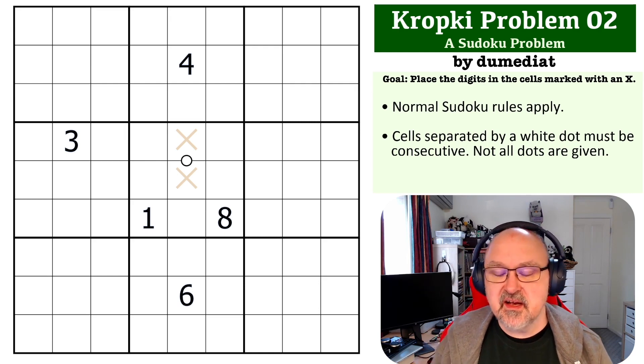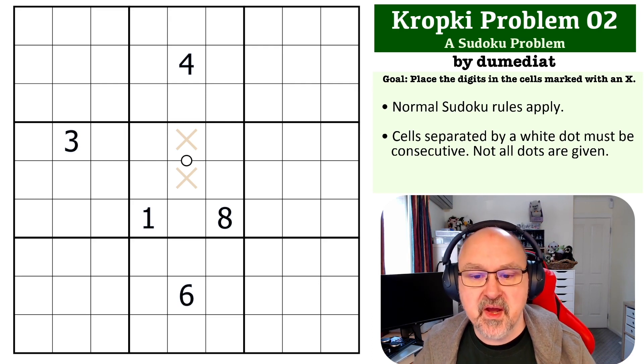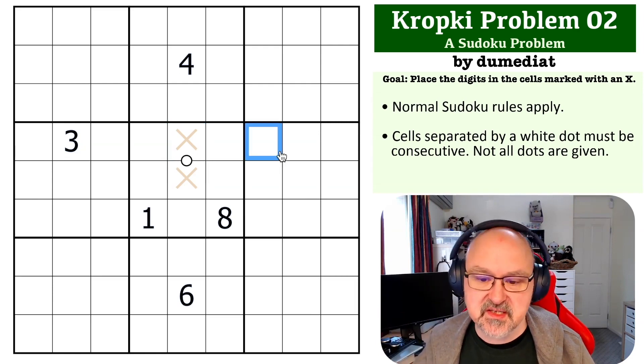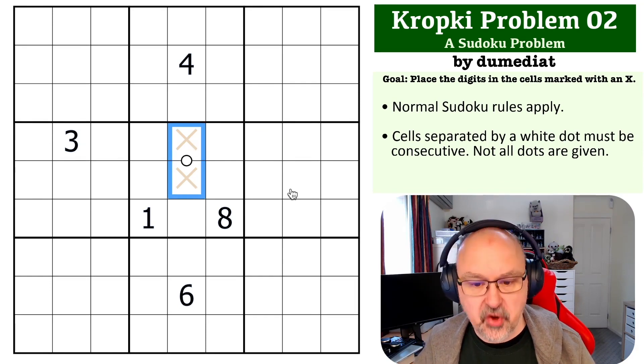This is a trick that is used quite a lot in Kropki problems where you need to look at a dot like this and try and figure out what the possibilities are. There's a couple of ways you can look at this. The way I used to look at this when I first started was just going through the options and seeing what could be on this dot.